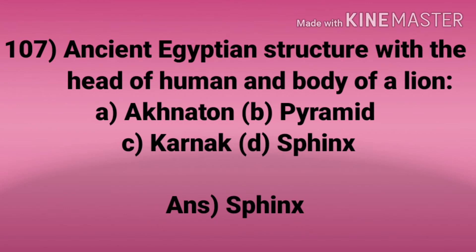Question 107. Ancient Egyptian structure with the head of a human and body of a lion. Options: Akhenaten, Pyramid, Karnak, Sphinx. Answer: Sphinx.